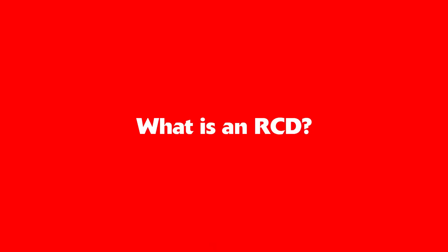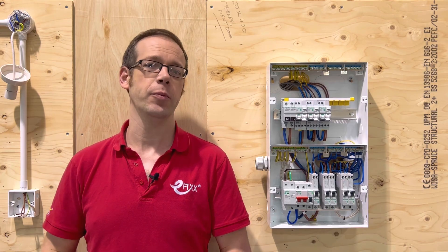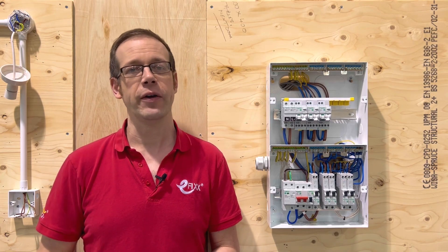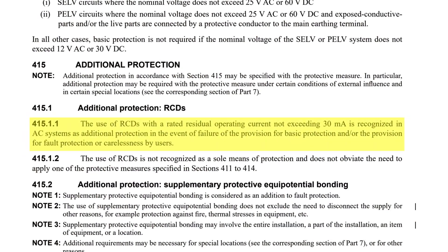So what is an RCD and what kind of protection does it offer? Well an RCD offers two main forms of protection. The one that's probably the most common nowadays is found in regulation 415.1.1. The use of RCDs with a rated residual operating current not exceeding 30 milliamps is recognized in AC systems as additional protection in the event of failure of the provision for basic protection and or the provision for fault protection or carelessness by users.